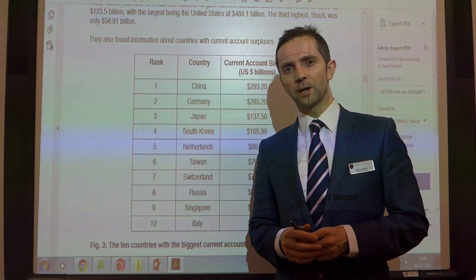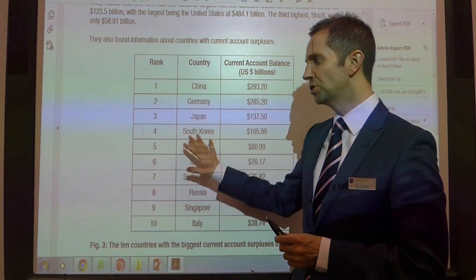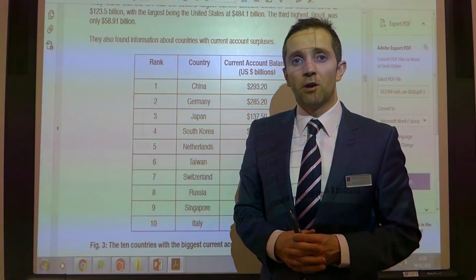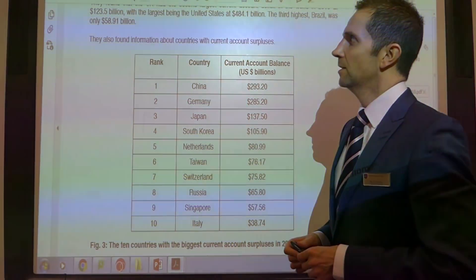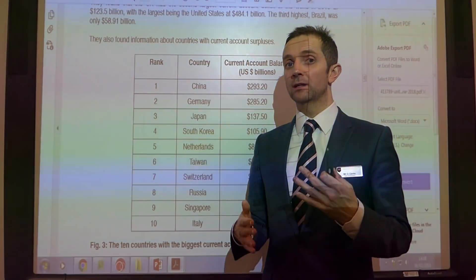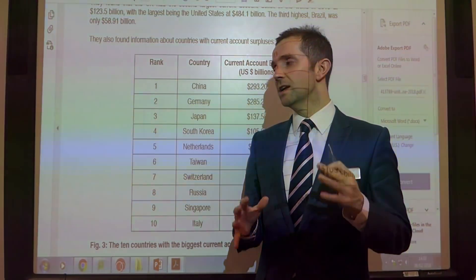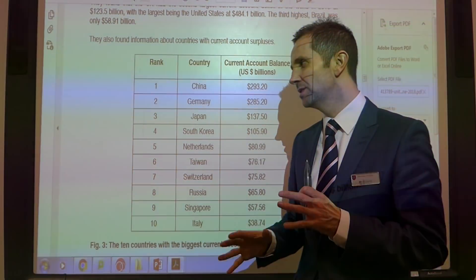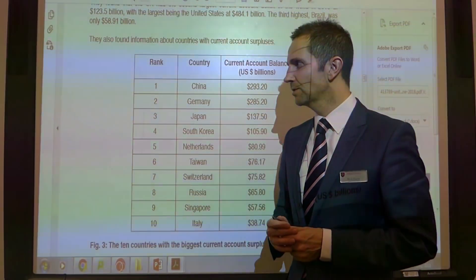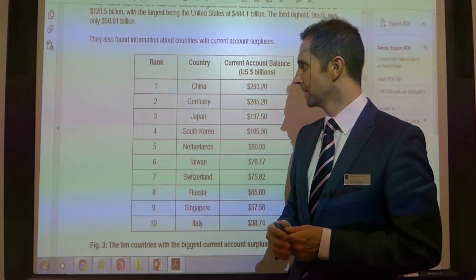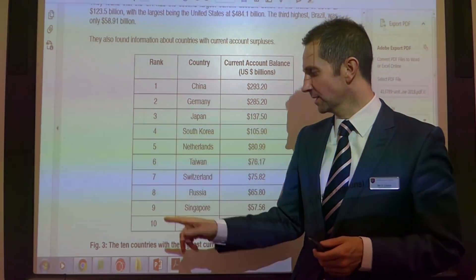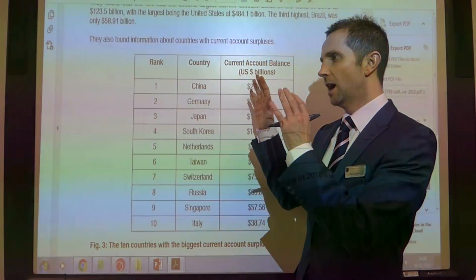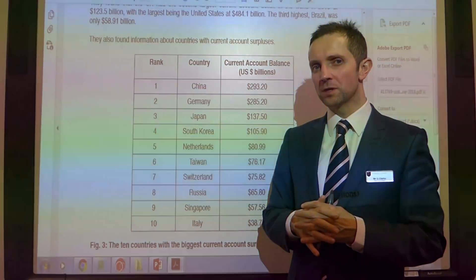Hi guys, G-Economics here once again with the GCSE stimulus material for OCR June 2018. Just continuing on this particular playlist, having a look now at the questions which I set and predicted with regard to the current account. We've been looking at the previous page where we had figures 1 and 2, looking at exchange rate and the current account deficit for the UK.